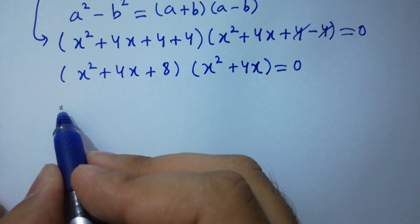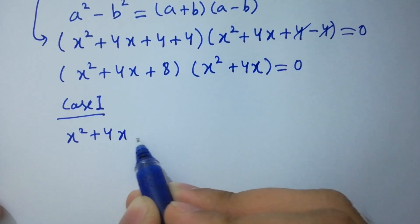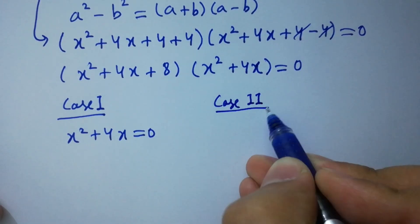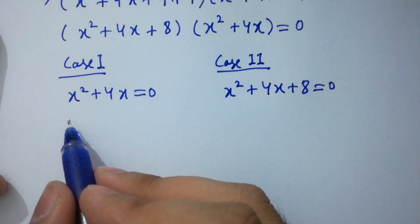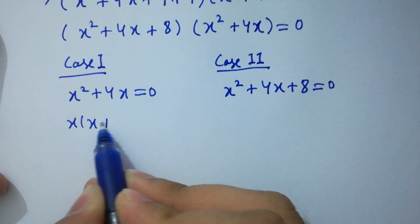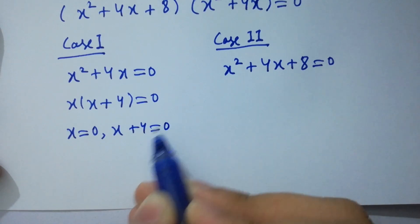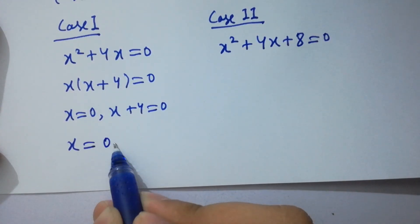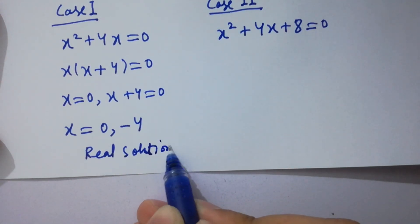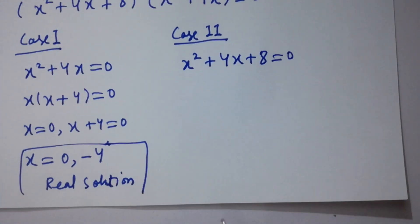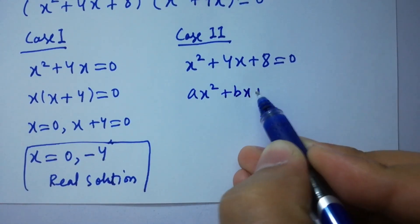So we have two cases here. Case 1: x squared + 4x = 0. Taking x common, we have x(x + 4) = 0, so either x = 0 or x + 4 = 0, giving x = −4. These are our two real solutions: x = 0 and x = −4.